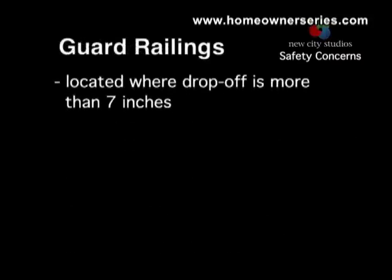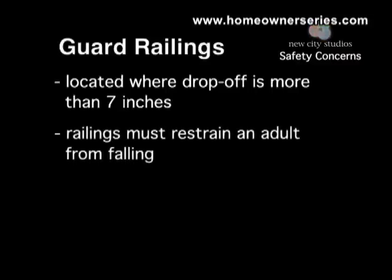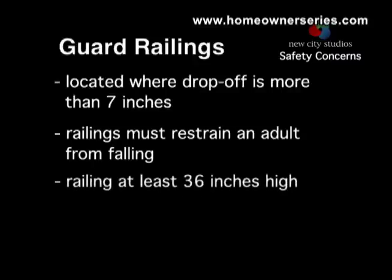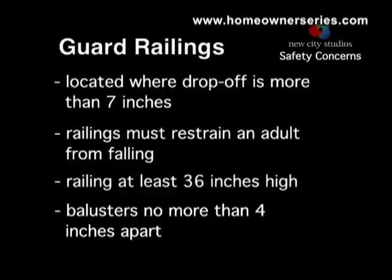Guard railings are located on balconies, landings between staircases, on open second-story hallways, patios, or anywhere where there is a drop-off more than the normal step of 7 inches. The railings must be secure and able to restrain an adult person from falling over the edge. The railing needs to be at least 36 inches high and be made up of balusters no more than 4 inches apart. A 4-inch ball should not be able to pass between the balusters or pass through any opening in the railing.